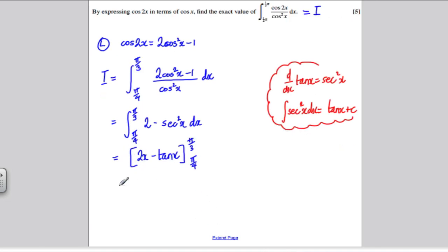So you put in pi by 3 first, and you get 2 pi over 3. When you put in pi by 3 to tan x, you get root 3, so this would be subtract root 3. And then you put pi by 4, you've worked that out, and you subtract the answer when you put pi by 4 in. 2 times pi by 4 is pi over 2, and pi by 4 into tan gives me 1, so this would be minus 1.